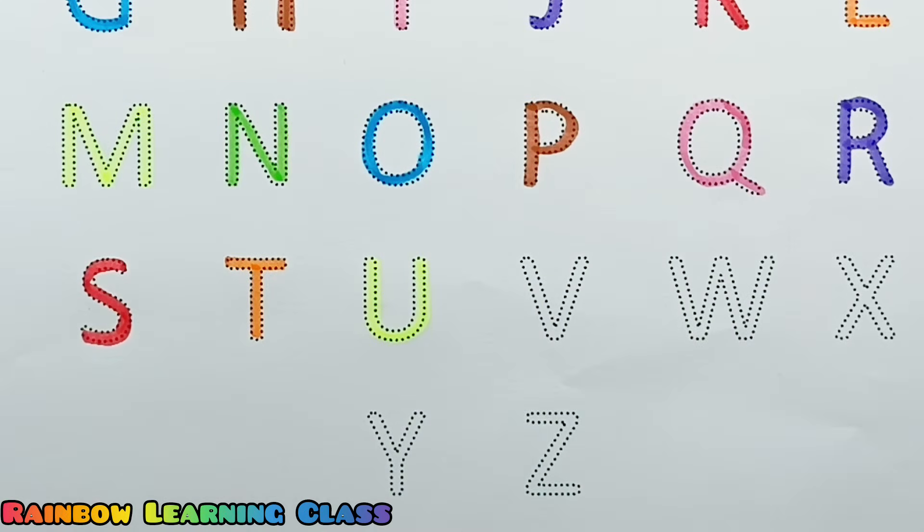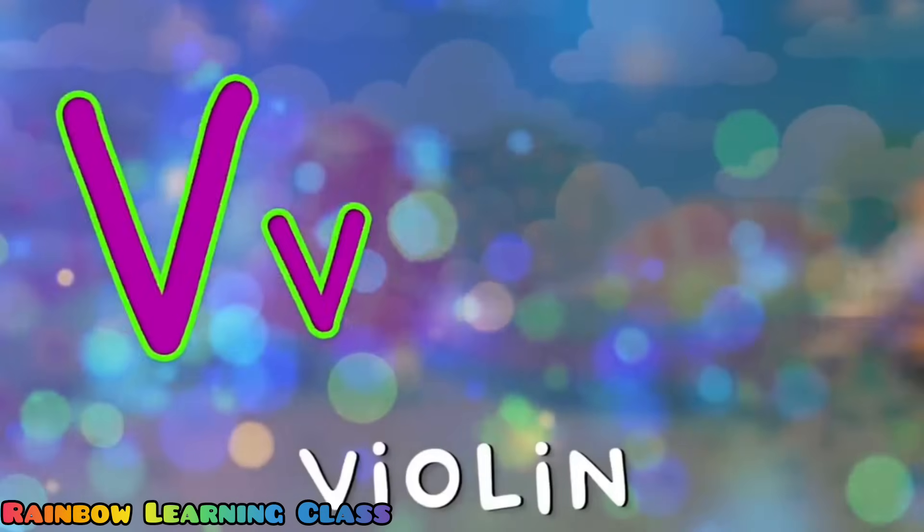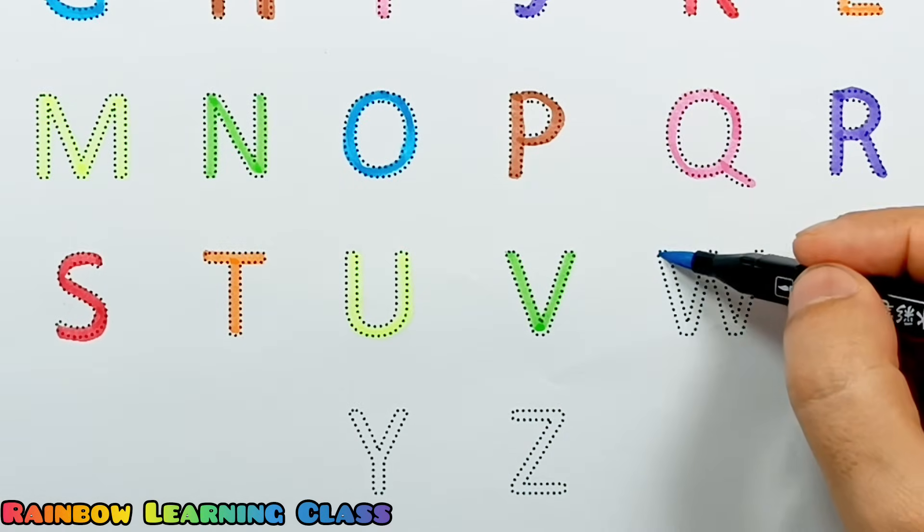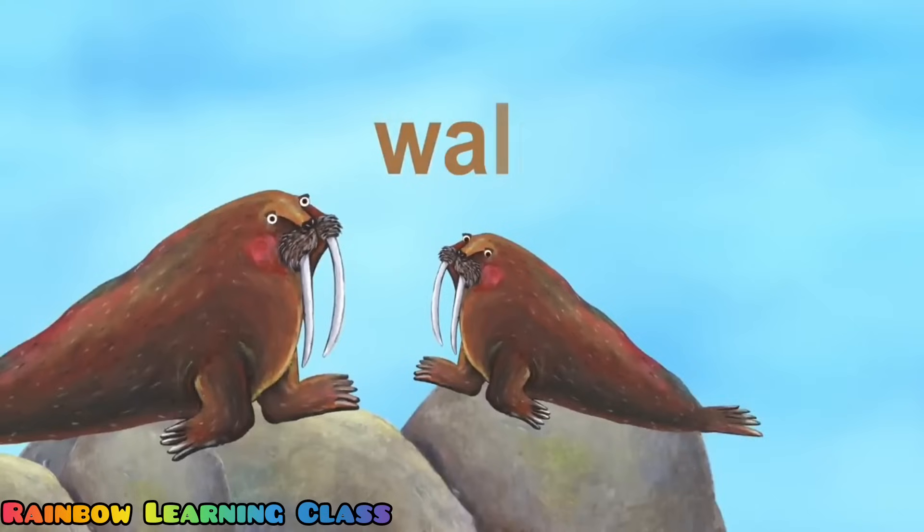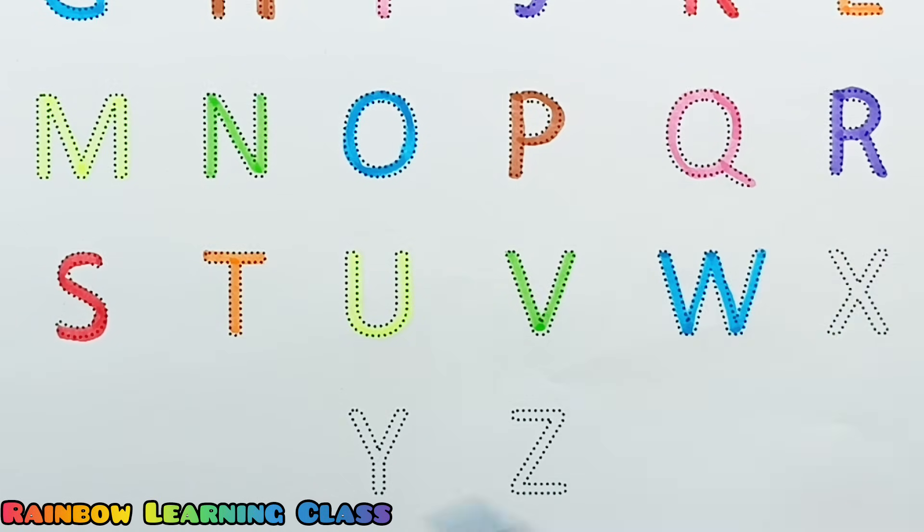R, S, T, U, V, W, X. V, V is for violin. Y and Z. Now I know my ABCs. W is for walrus. Walrus! Next time won't you sing with me?